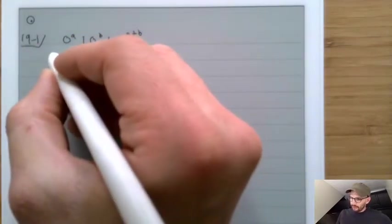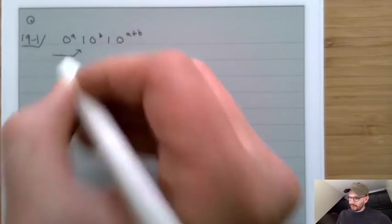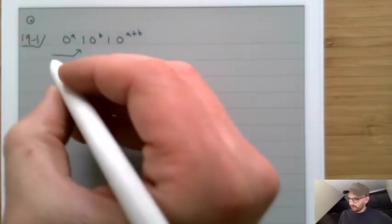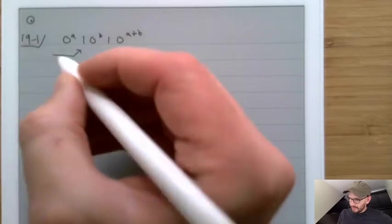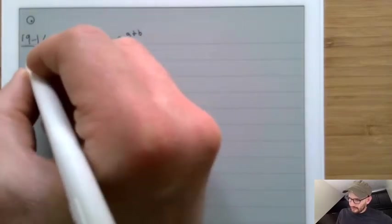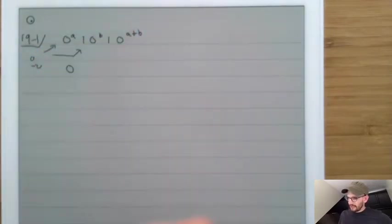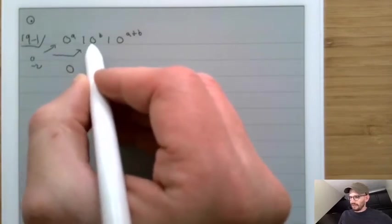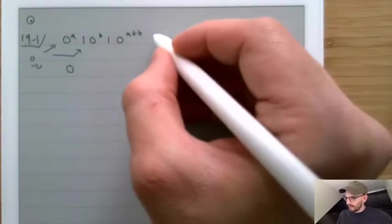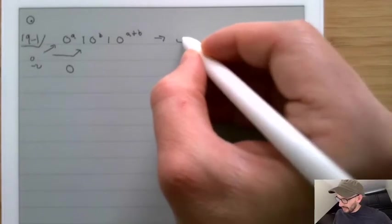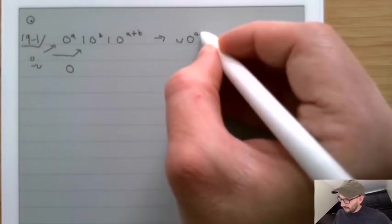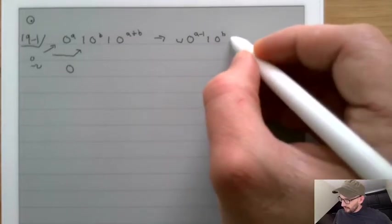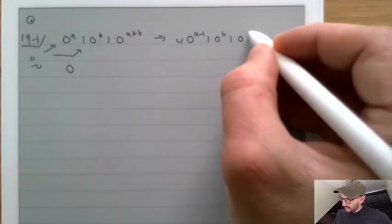What you do is you look through until you find the first 1, and then you replace it with a 0 after replacing the first 0 here with a blank. So the idea is that you're going to take 0 to the a, 1, 0 to the b, 1, and turn that into: blank, 0 to the a minus 1, 1, 0 to the b, 1, 0 to the a plus b.